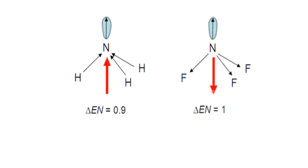Similarly, in the NF₃ molecule, fluorine is more electronegative than nitrogen. Hence, the dipole arrow direction is downwards, and the resultant is in the downward direction. In NH₃, nitrogen is more electronegative than hydrogen, so the resultant is in the upward direction.